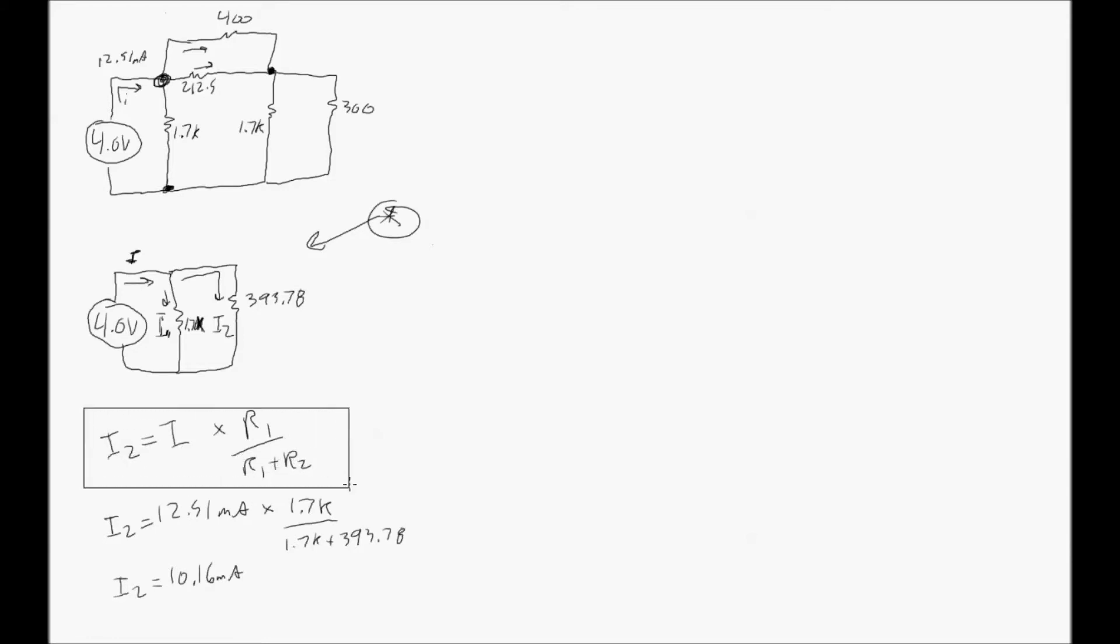So this is the current divider formula. You have your I2. In this case, it's the branch of an equivalent resistance to all other resistors in the circuit. And that is branching, that is the opposite branch from I1, which is the 1.7K ohm that is right there.